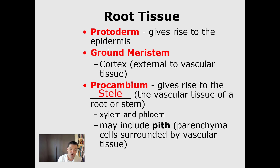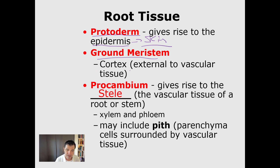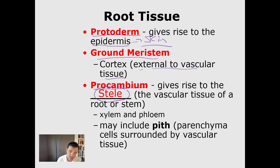When we talk about root tissue, we have our three primary growth types. The protoderm gives rise to the epidermis, the skin on the outside of the plant. The ground meristem is the material external to the vascular tissue, sort of the center of the plant. And the procambium gives rise to the vascular tissue. Collectively, the xylem and the phloem together are called the stele of the plant, and sometimes that includes a pith located in the center.